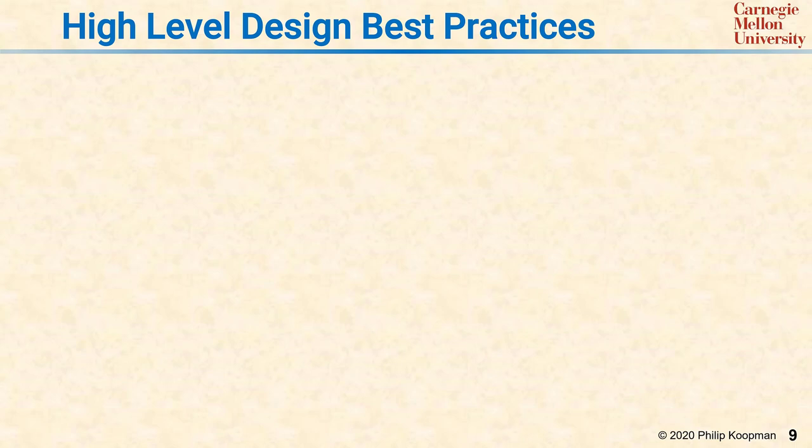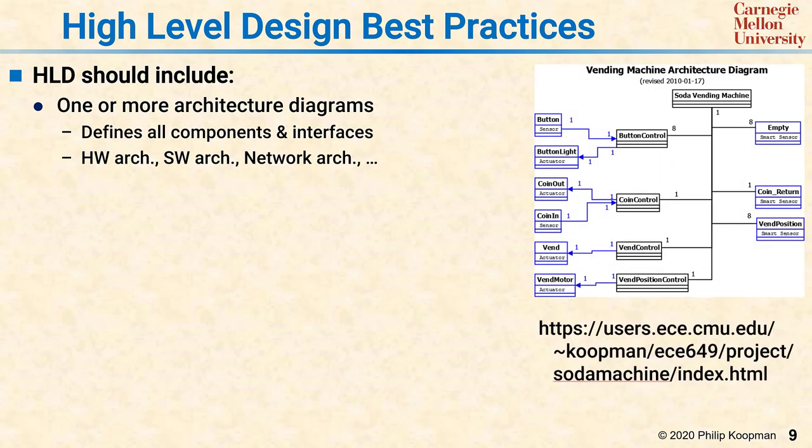The high-level design document should include one or more architecture diagrams to give you the big picture of the components and their interfaces. That might include a hardware architecture, a software architecture, or a network architecture — some, all, or none of these — but at some point, if there's no architecture diagram, there's no way to be oriented to what the system does.